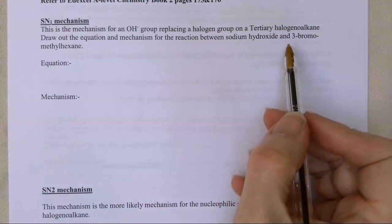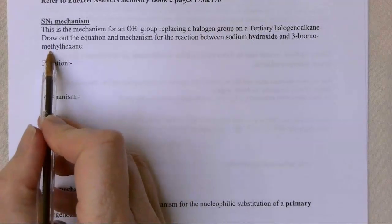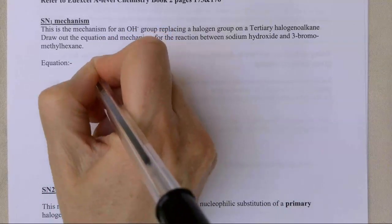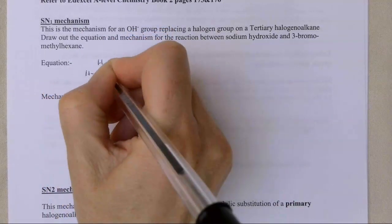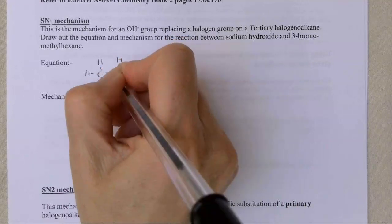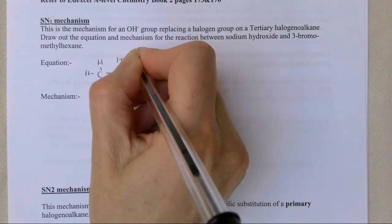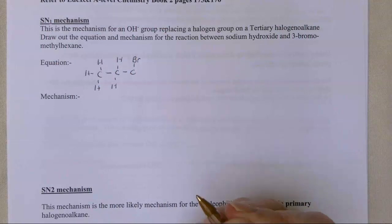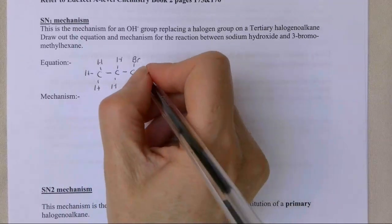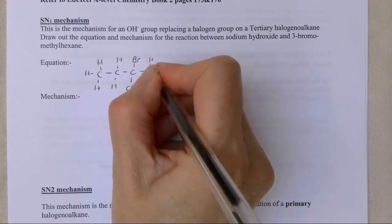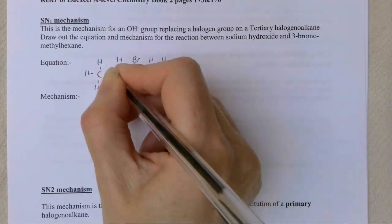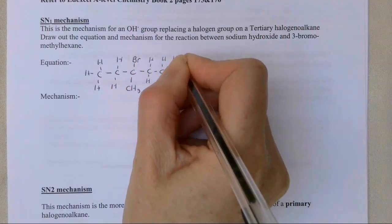We're looking first of all at this SN1 mechanism. Overall, we're going to take our halogenoalkane, which in this case is 3-bromomethylhexane. So we have a CH3 group on the end, and then we have another carbon here. Then we have our carbon with our Br group on it, and we also have the same carbon with a methyl group on it. We've got six carbons in total, so I've got another carbons on this side to make six in total.